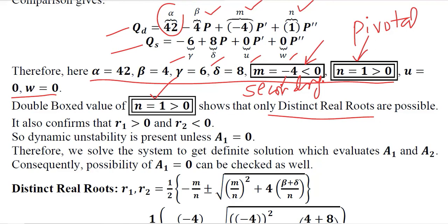When N is positive, from the last video we remember that it is only a distinct real root case. Other two cases cannot be possible in this situation. We will have two roots, definitely they will be distinct R1 and R2. The first one will be positive and the other one will be negative.